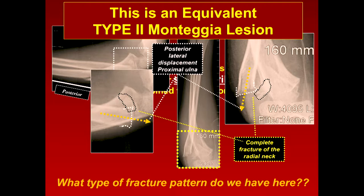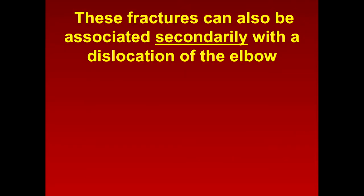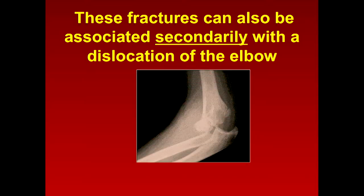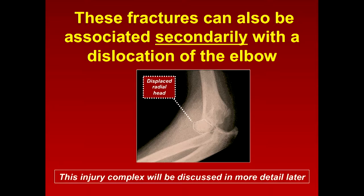They can also occur secondarily with a dislocation of the elbow. Here's one in which the elbow dislocated and the radial head fractured - you can see this displaced radial head. So radial neck fractures can occur as part of a dislocation complex, which we'll discuss in more detail. Now, how do you classify radial neck fractures? Classification is important because it tells you three things: the structure of the fracture, the treatment, and the possible complications.